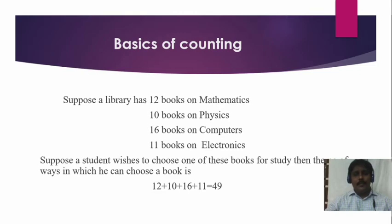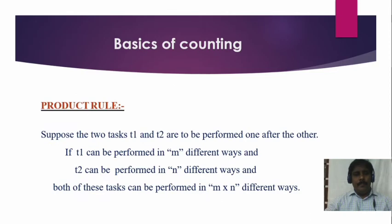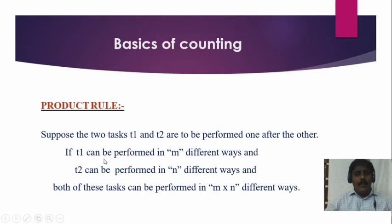Next is the Product Rule. Product means multiplication. The product rule says: suppose two tasks T1 and T2 are to be performed one after the other. T1 is performed in m ways and T2 is performed in n ways. Then both tasks can be performed in m into n different ways. Sum means addition and product means multiplication.